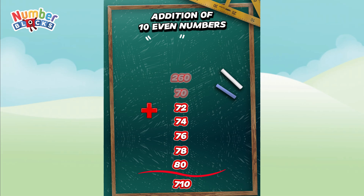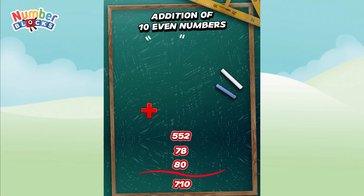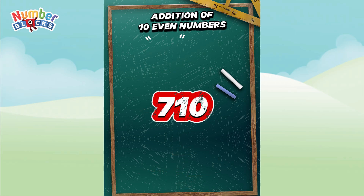330 plus 72 is equal to 402. 402 plus 74 is equal to 476. 476 plus 76 is equal to 552. 552 plus 78 is equal to 630. 630 plus 80 is equal to 710.